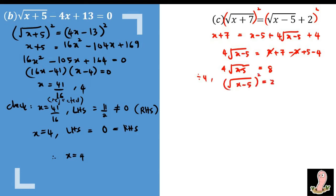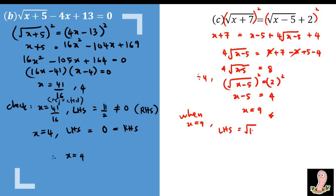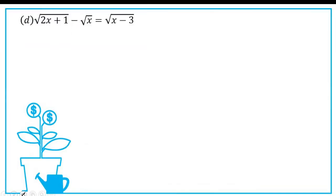Dividing both sides by 4 gives √(x − 5) = 2, so squaring gives x − 5 = 4, thus x = 9. Checking: when x = 9, the left-hand side is √16 = 4, and the right-hand side is √4 + 2 = 4. Both sides are equal, so x = 9 is confirmed.